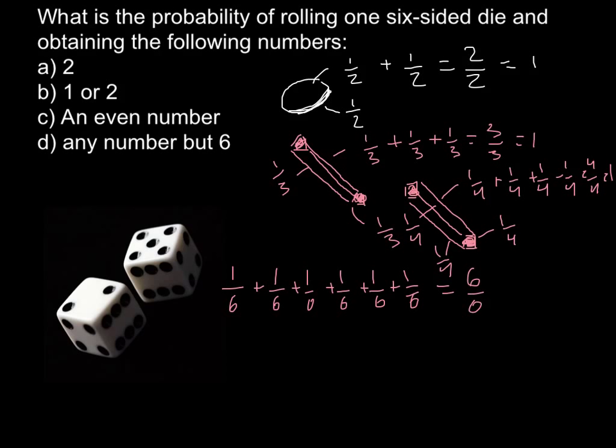So we have six over six, that is one. One over six represents the probability to land on one of the sides if we toss it. Question A: what is the probability to get number two? Our answer is one over six — there is one side, and all sides are equal in their probability, so our answer would be one over six.